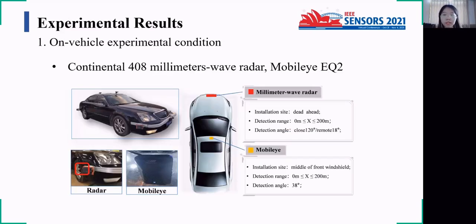To verify the feasibility of the method, we designed on-vehicle experiments using the Continental 408 Radar and MobileEye. The parameters of two sensors and their position on the vehicle are shown in this picture.